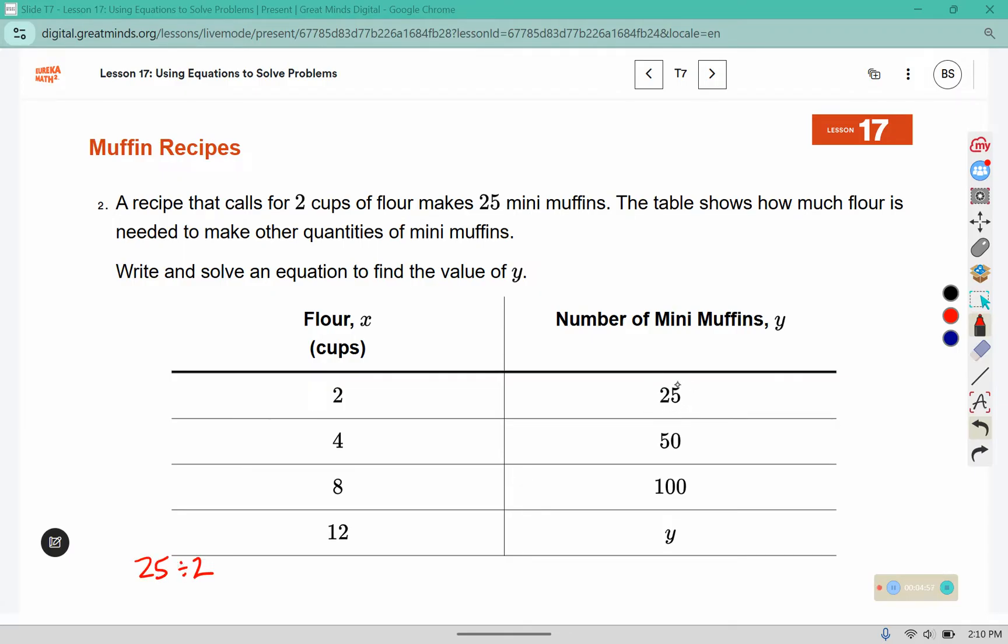So we'll do the y value divided by the x value. 25 divided by 2 is 12.5. 50 divided by 4 is 12.5. And 100 divided by 8 is also 12.5. So it is proportional. Now that is our k value, our constant of proportionality.